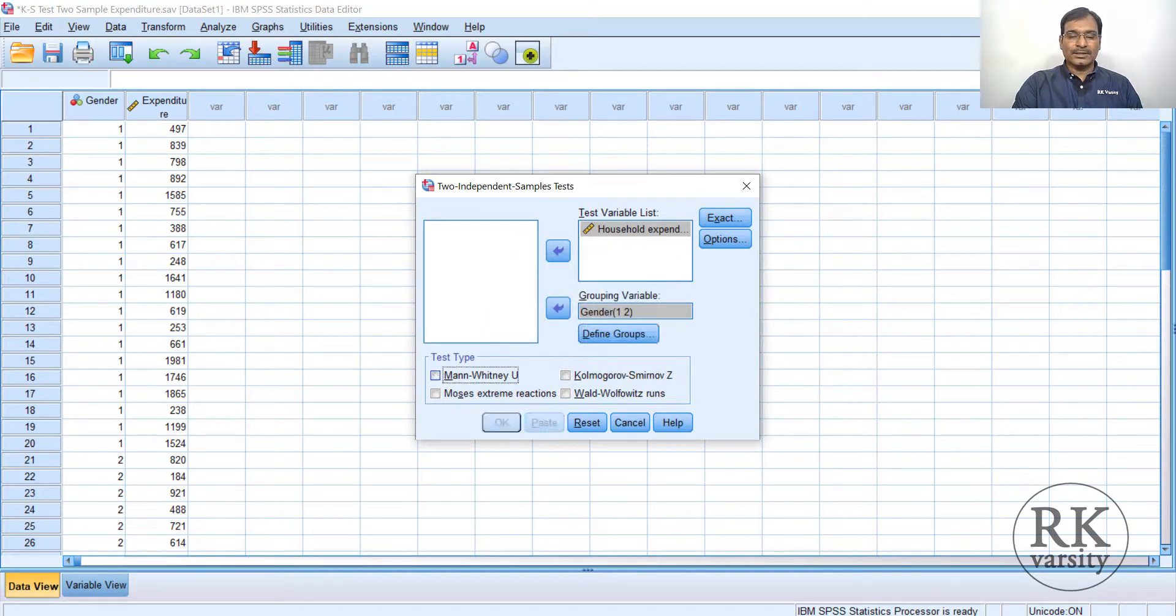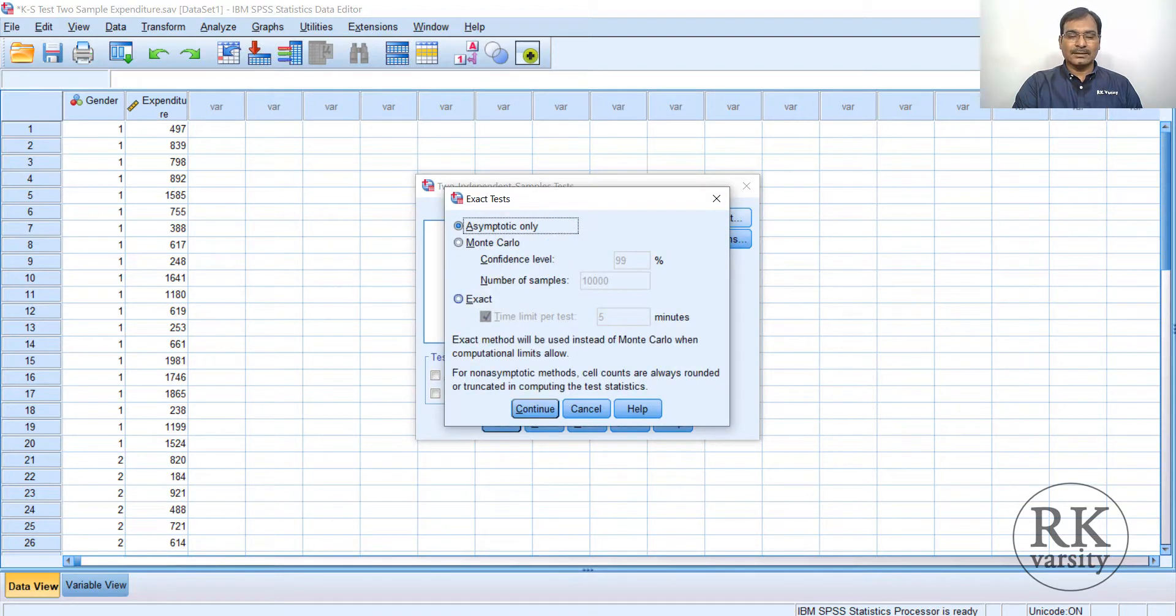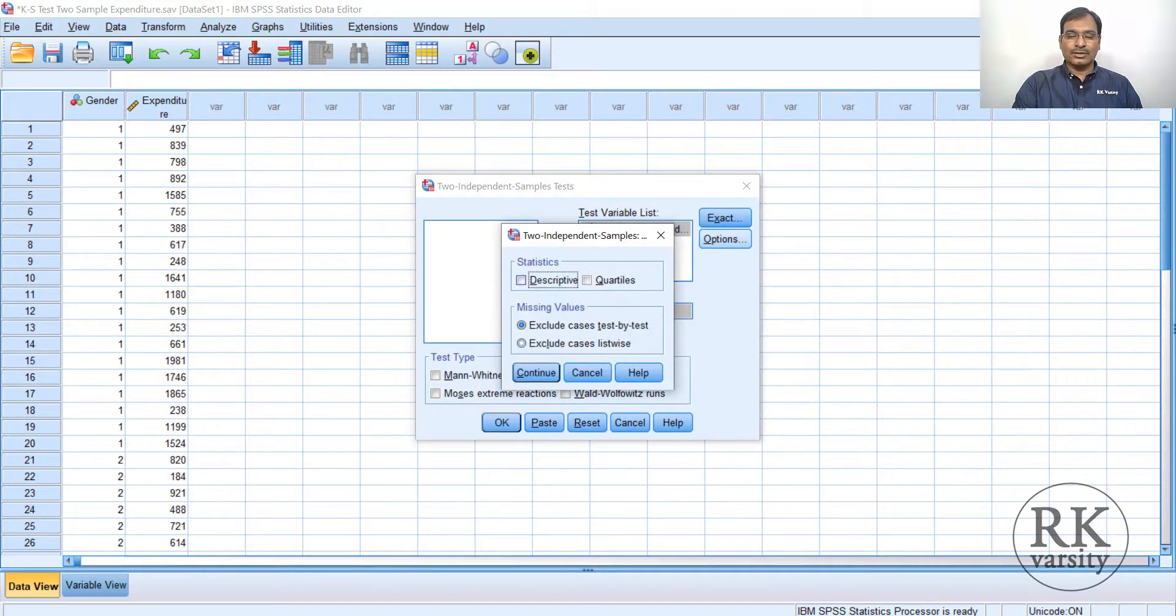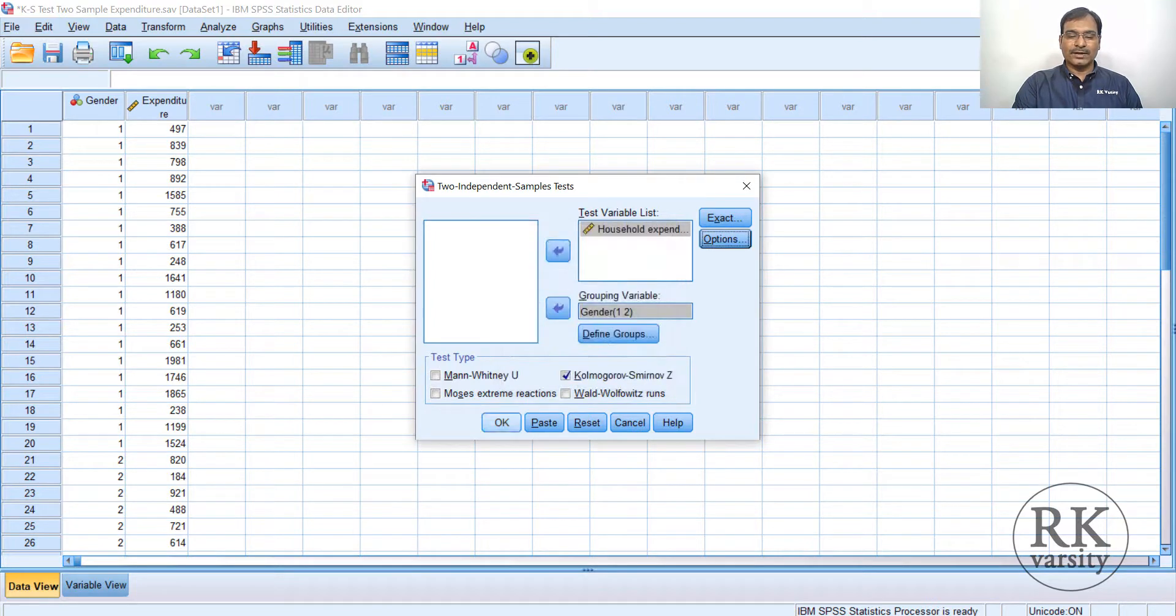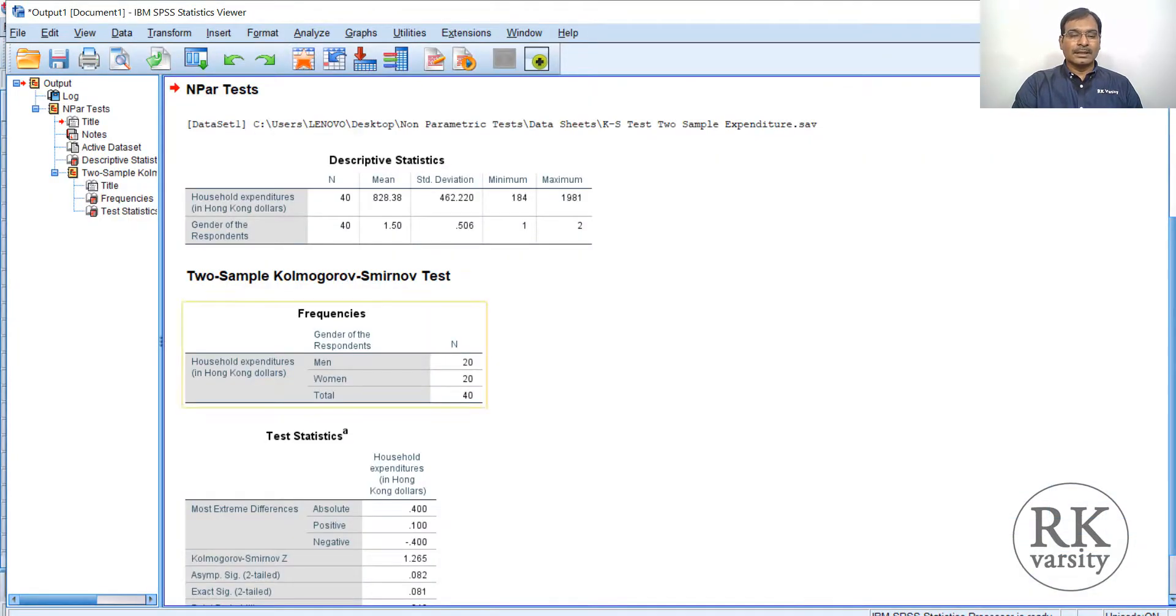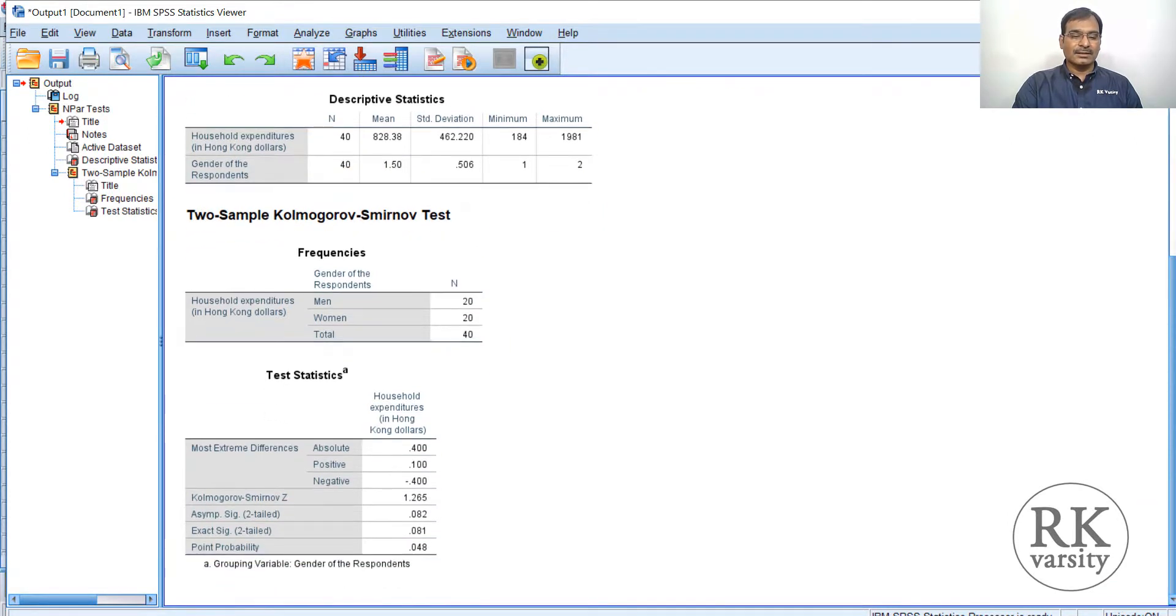Uncheck the Mann-Whitney U test and now check the Kolmogorov-Smirnov test. Click on the Exact button and select Exact. Click Continue. Go to Options and choose Descriptives. Click Continue, then finally click OK. The result is presented in an output document. Here you have observations, N is 40—20 women and 20 men. You can see the frequencies. The Kolmogorov-Smirnov test value is 1.265, and the exact significance for two-tailed is 0.08.